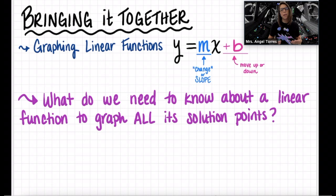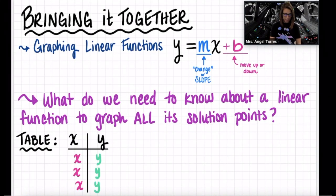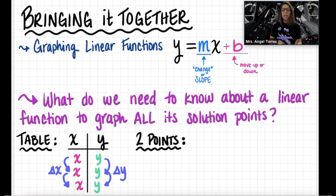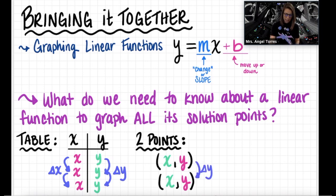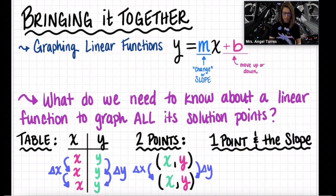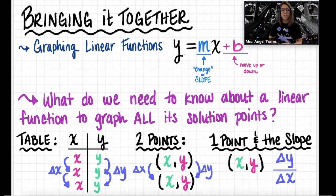Think about what information you need if I said, hey, graph this line. Some of you may have said give me a table — I'll take some inputs and generate some outputs. But that will only take you so far. Once you have your table, you're also going to want to calculate your change in y and change in x, your slope. Even two points still means you'd calculate the slope to find more points. The simplest way to graph a line is if you're given one point and the slope, because you'll start at that one point and use the slope to find the rest of your points. That's all you need to find all the rest of its solutions. Let's get into today's examples.